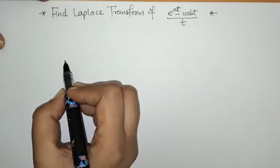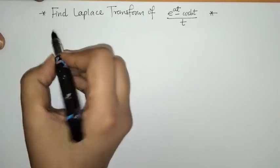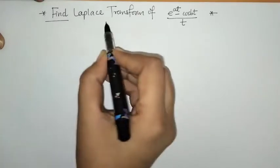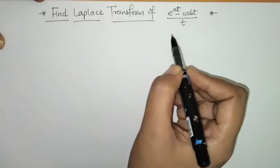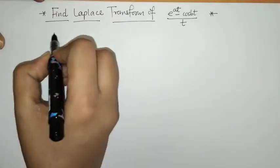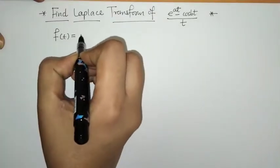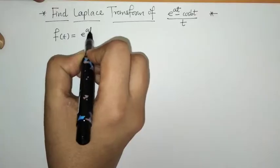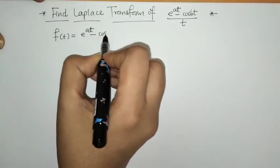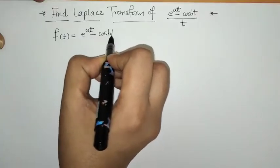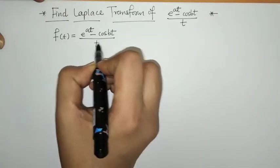Hello everyone, welcome to Unlock Maths. Today we have to find the Laplace transform of this function. Here we have f(t) equals e raised to at minus cos(bt), divided by t.